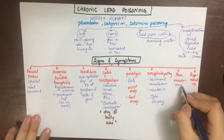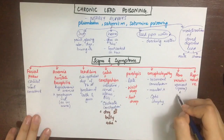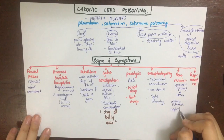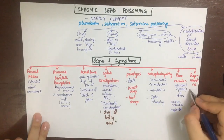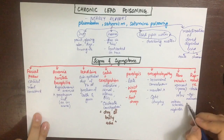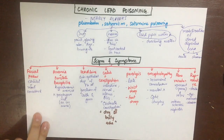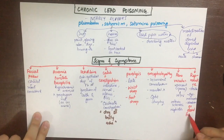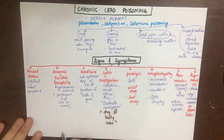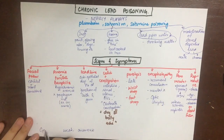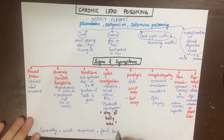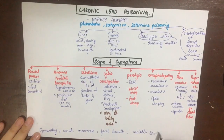There is also lead encephalopathy, manifesting as recurrent convulsions, mental deterioration, and optic atrophy. Renovascular complications will be due to hypertension, because lead is a vasoconstricting agent, and there is also arteriosclerotic nephritis.